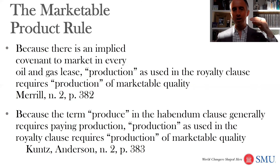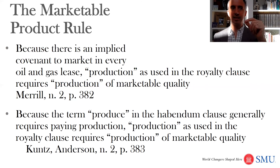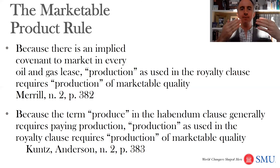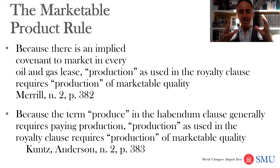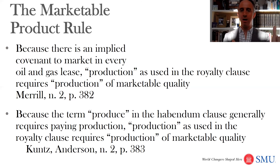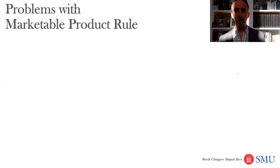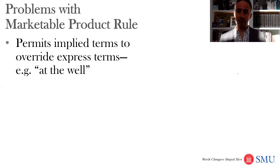Another theory says the term 'produce' in the habendum clause generally requires paying production. Just because you have literal oil and gas coming out of your well doesn't mean you'll keep that lease for the whole secondary term — it requires production, meaning paying production. So if 'produced' means paying production, then to have real production it's got to be something worth something — a product, natural gas in this case, that somebody will buy. And if nobody will buy it at the well, it's not really a product unless you ship it to them and put it in marketable quality.